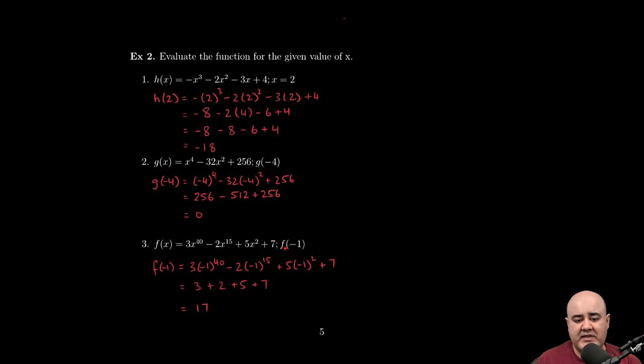And then, finally, for this function, we did the same thing. The notation here is what I'm trying to get across. f(-1) means take the function f, wherever you see an x, replace it with -1. So, you get 3(-1)⁴⁰ - 2(-1)¹⁵ + 5(-1)² + 7. Note that the exponentiation happened first, because, again, we have to follow order of operations. -1 to an even power will just be 1. 1 times 3 is 3. Similarly, -1 to an odd power is -1. -1 times -2 is positive 2. -1 to an even power is positive 1. Times 5 is 5. And then the plus 7 just comes along. Cleaning this up, we get f(-1) = 17.